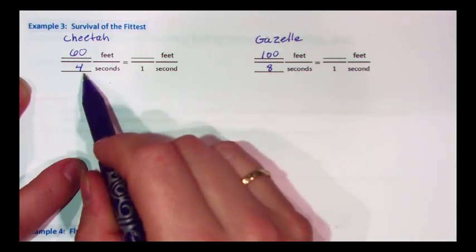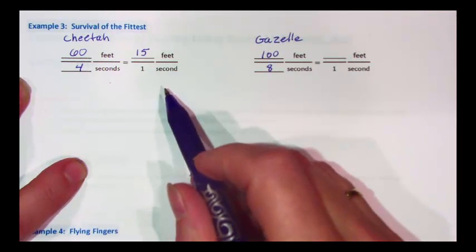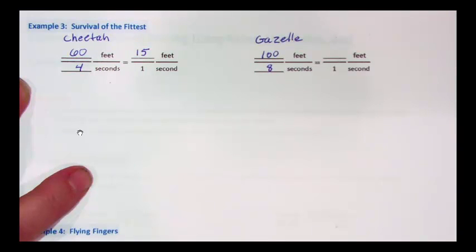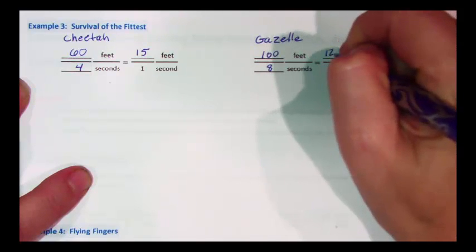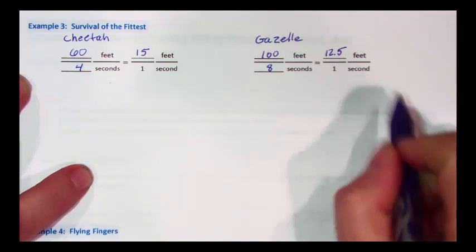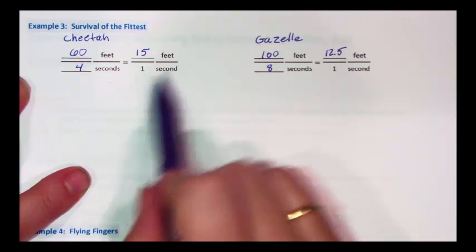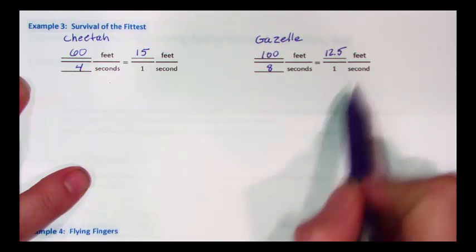60 divided by four is 15 feet in one second. 100 divided by eight is 12 and a half feet in one second. So it looks like in this case, the cheetah is going to win. He can go further in one second than the gazelle can go.